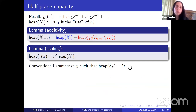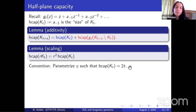We have seen that the half-plane capacity gives a natural way to measure the size of some set K_t because it satisfies two natural properties — additivity and scaling. When we look at curves in the upper half plane, most of the time we will assume that it has been parametrized by half-plane capacity. By that I mean that we parametrize the curve such that the half-plane capacity of the set K_t is given by 2t for any t.